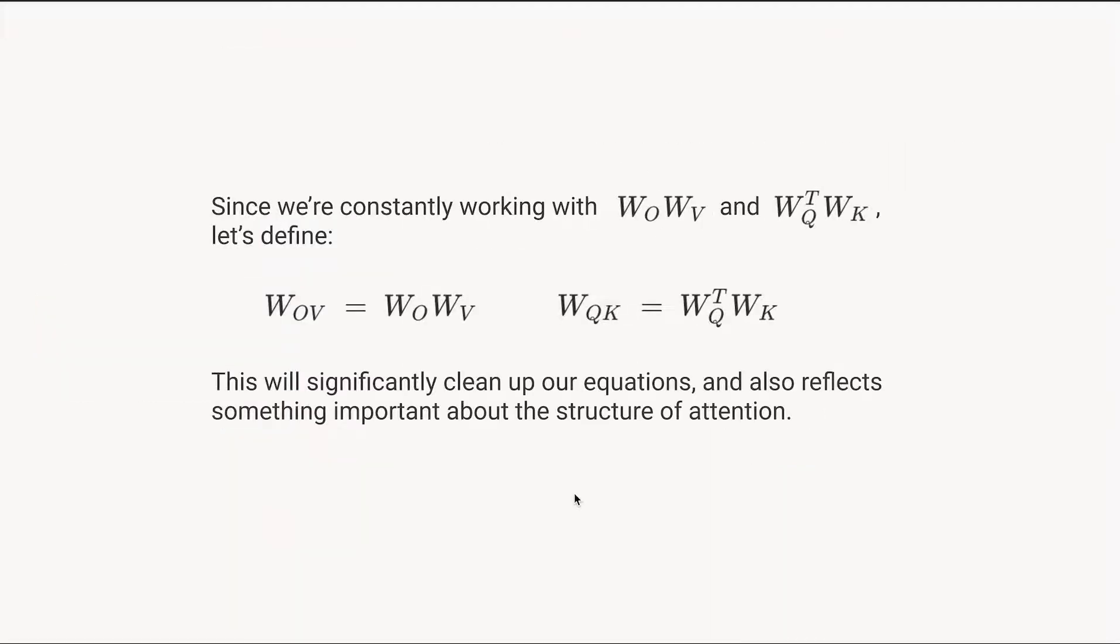Now, you might have noticed that every time we talk about WO, it always comes with WV and vice versa. And every time we talk about WQ, it always comes with WK. And because these equations are going to get a little bit larger and more complicated, for simplicity, we're just going to introduce these terms WQK and WOV that correspond to those products.